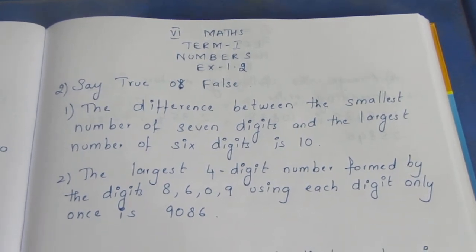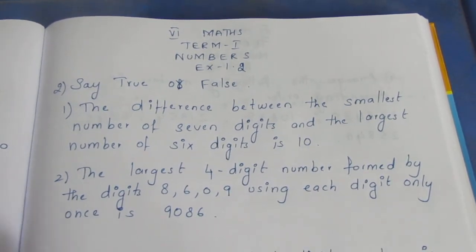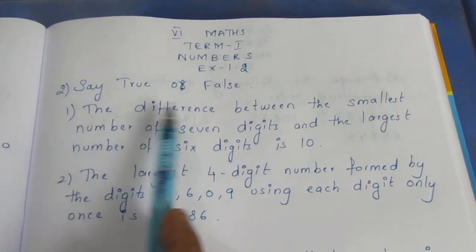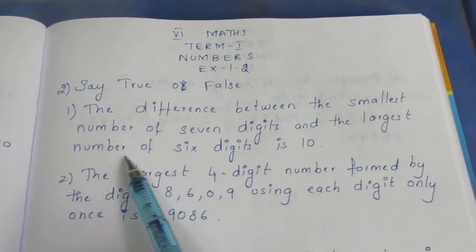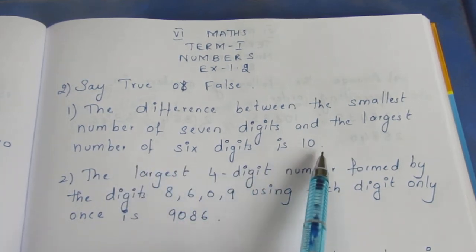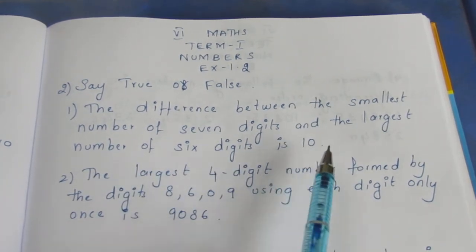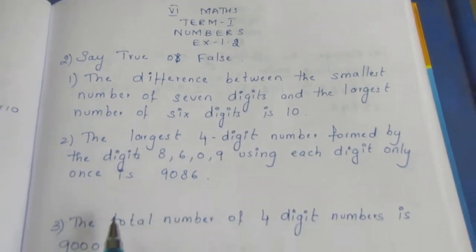Let's see if you can say true or false. The difference between the smallest number of 7 digits and the largest number of 6 digits is 10. So, what do you think?